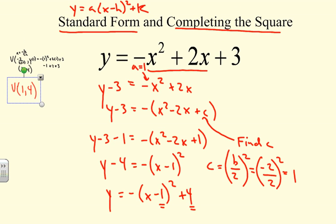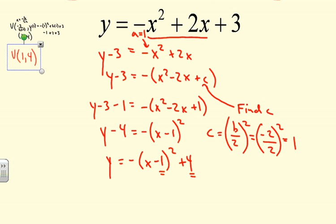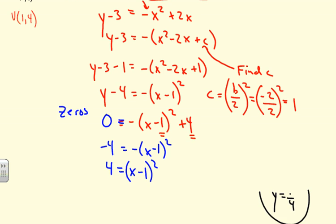Now using the completed square form, we can find the zeros. If the equation isn't factorable, we set y equal to zero. Subtracting 4 from both sides gives negative (x minus 1) squared equals negative 4. Dividing by negative 1 gives (x minus 1) squared equals 4.